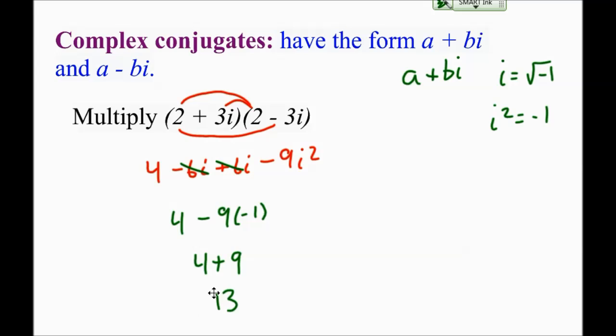Interesting. So when I multiply the complex conjugates, I no longer have an imaginary part. It just becomes a real number. And this will work always when you're multiplying complex conjugates. You will end up with a real number because the imaginary parts cancel out.